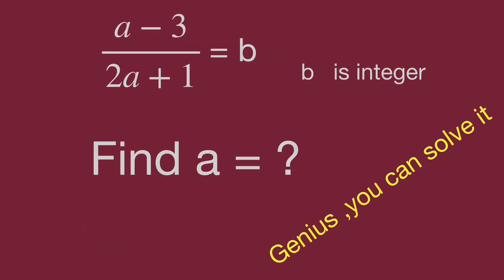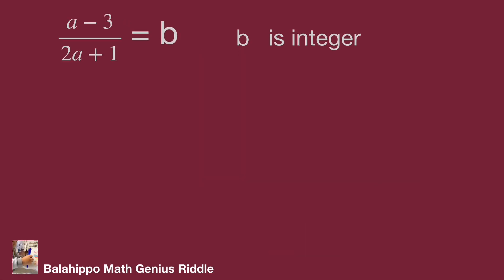We have a minus 3 over 2a plus 1 equal to b, and b is an integer. How can we handle it? I'm going to simplify the given information. Adjust a minus 3 to 2a something.